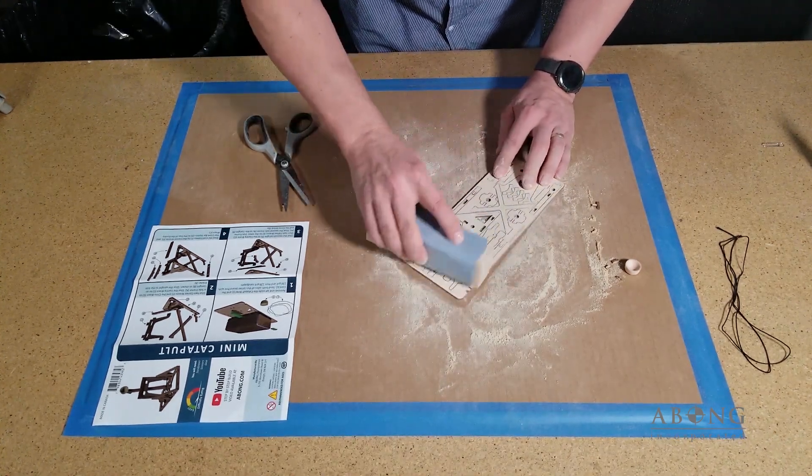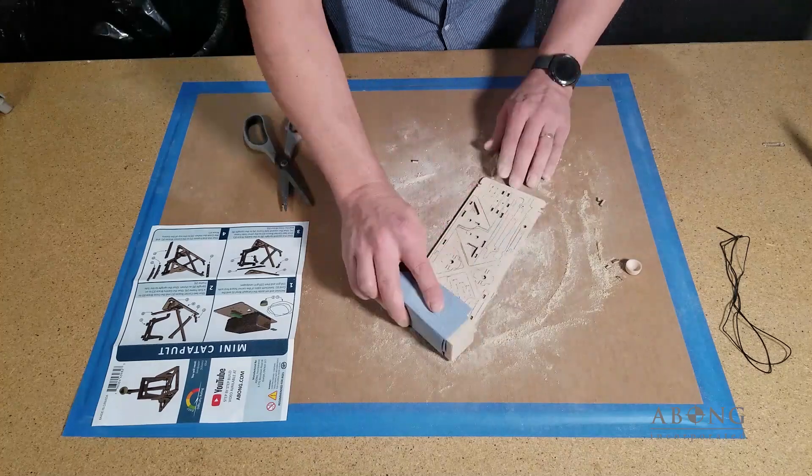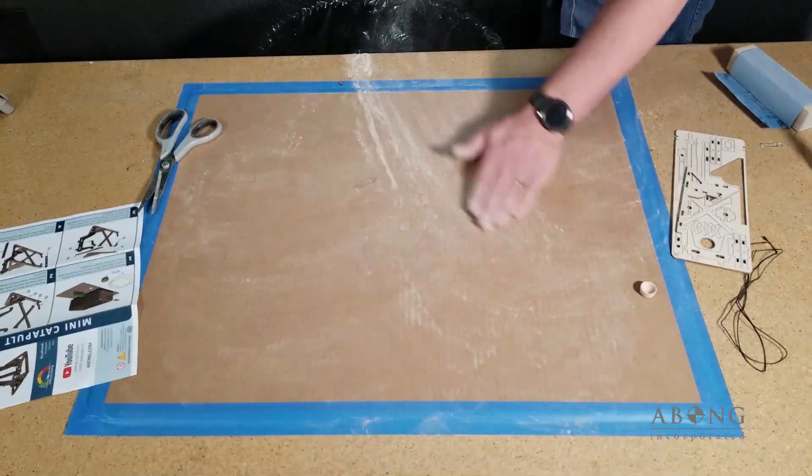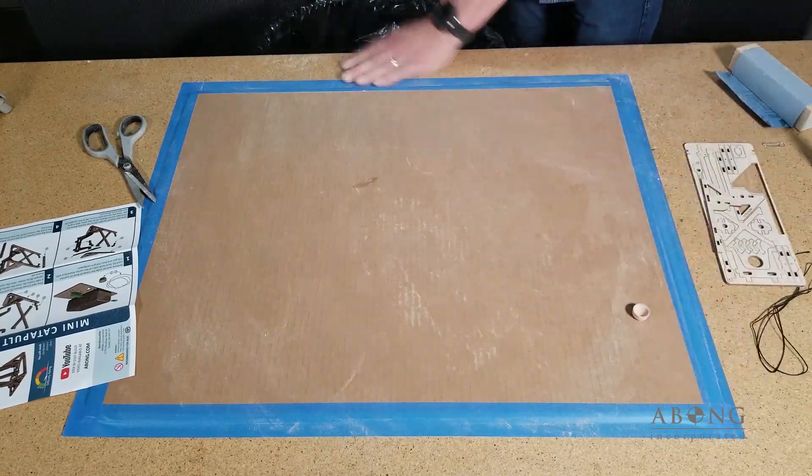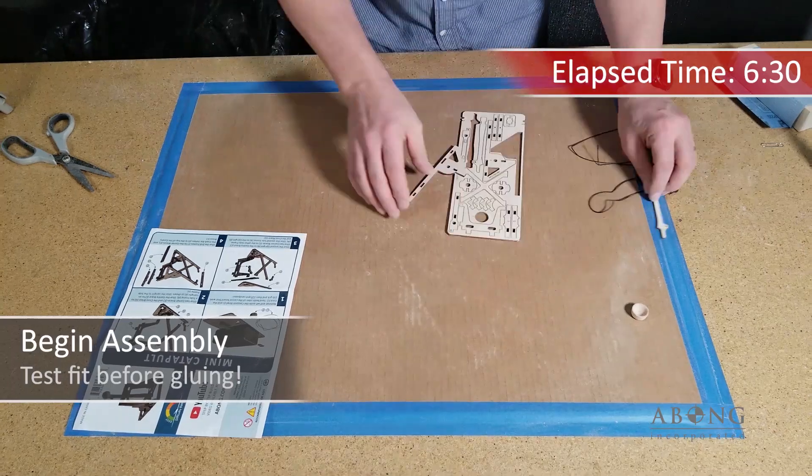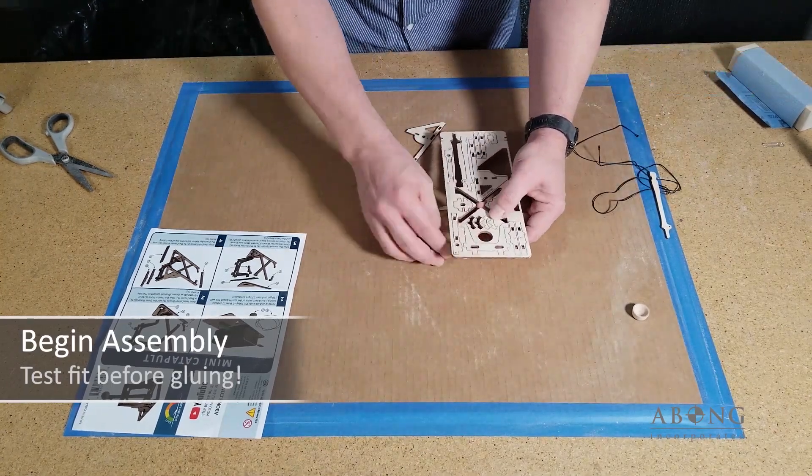So I'm switching to the 220 grit and I'm just going to clean up both sides and let's get rid of some of the sawdust here, just move it off the table. There we go. Alright so with that done we're about six and a half minutes in and we're ready to start building.